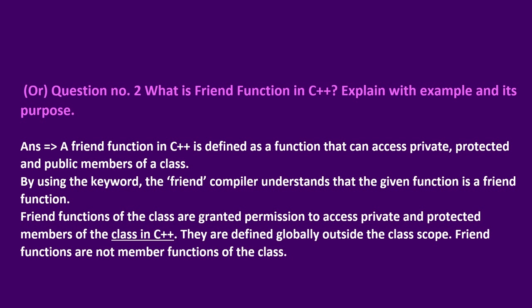Question number 2: What is a friend function in C++? Explain with example and its properties. A friend function in C++ is defined as a function that can access private, protected, and public members of a class. By using the keyword 'friend', the compiler understands that the given function is a friend function. Friend functions are granted permission to access private and protected members of the class.